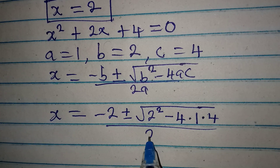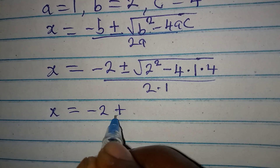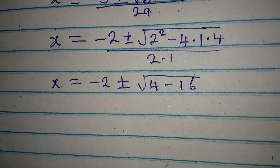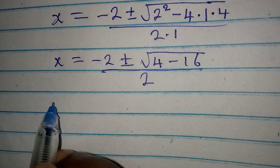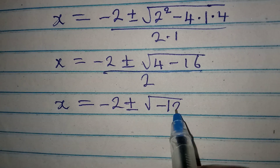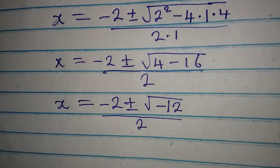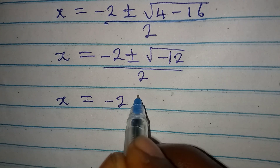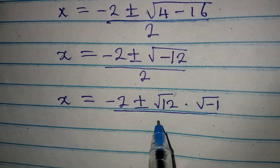Substituting: x equals minus 2, plus or minus the square root of 2² minus 4 times 1 times 4, all over 2 times 1. This simplifies to minus 2 plus or minus the square root of 4 minus 16, over 2. That gives us square root of negative 12. I separate the negative: square root of 12 times square root of negative 1, all over 2.